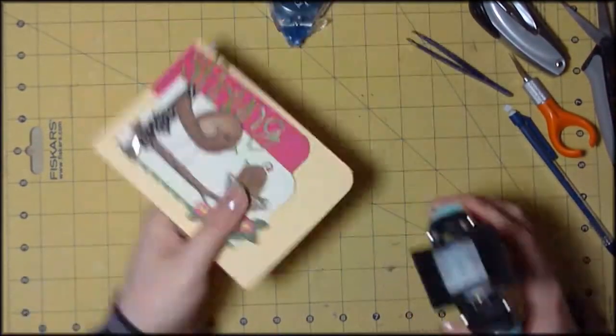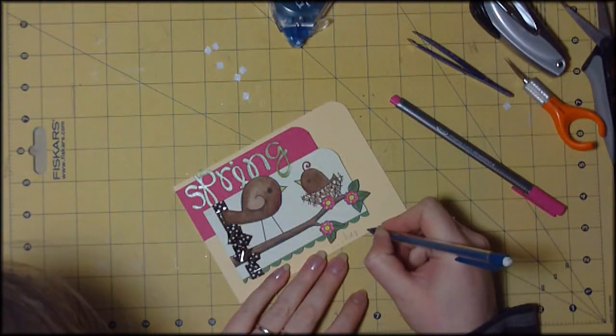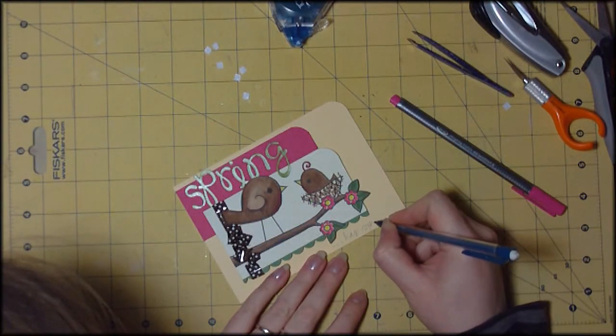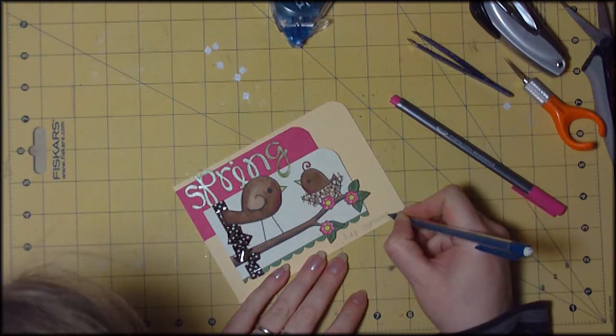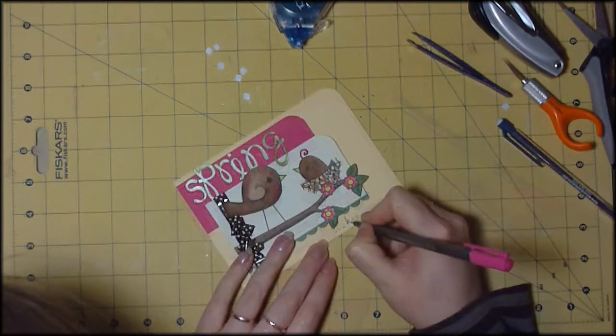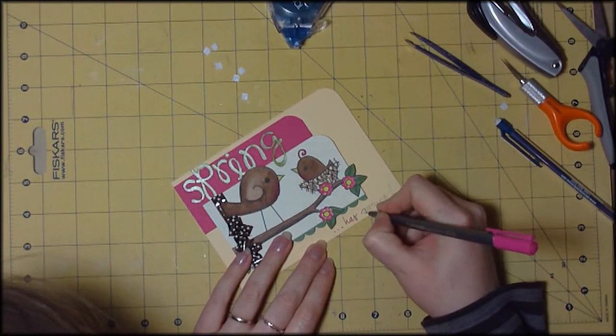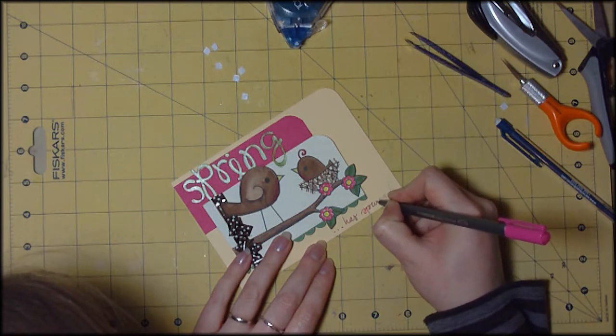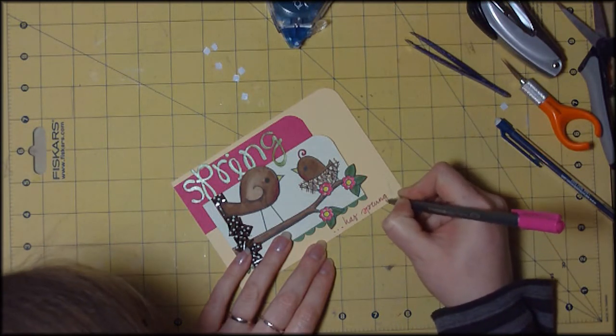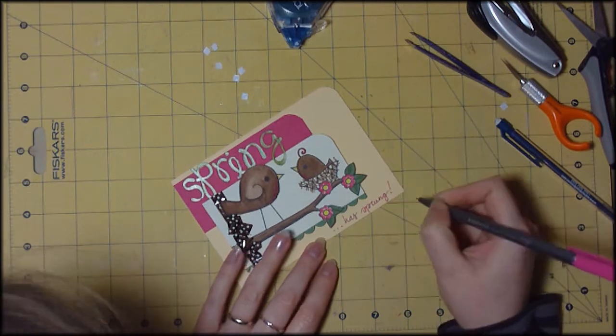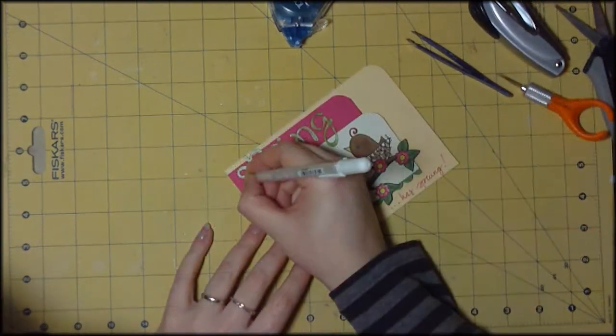So here I'm just writing in pencil my sentiment at the bottom. It says 'has sprung,' as in spring has sprung. And then I'm going to go over it with this pink pen. I always like to write my sentiments in pencil first just so I'm sure I'm happy with the way they look before I go ahead and commit myself with ink.